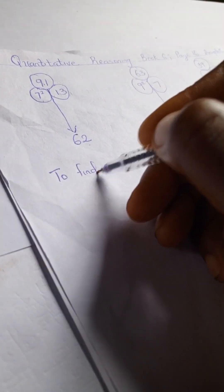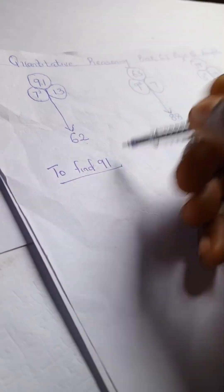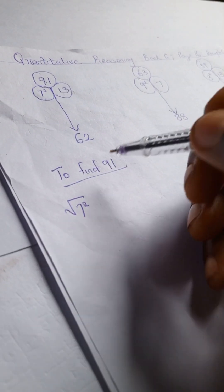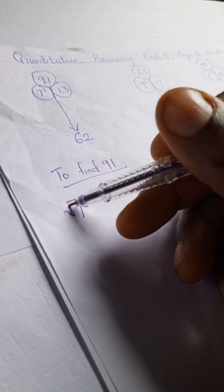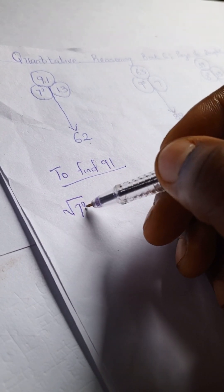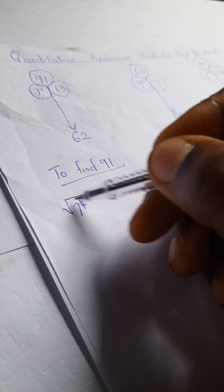So to find 91, here we are going to have square root of 7 squared. Now, square root of 7 squared, to calculate this, the squared is going to cancel out the square root, more like dividing each other, and you're going to have your 7 left.